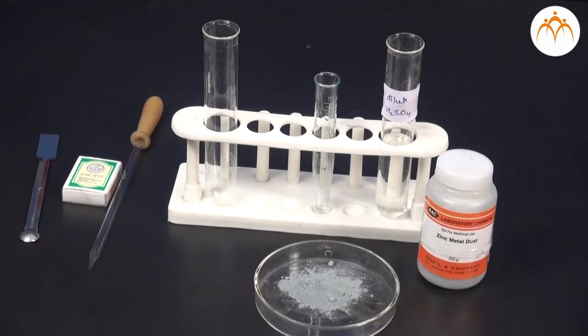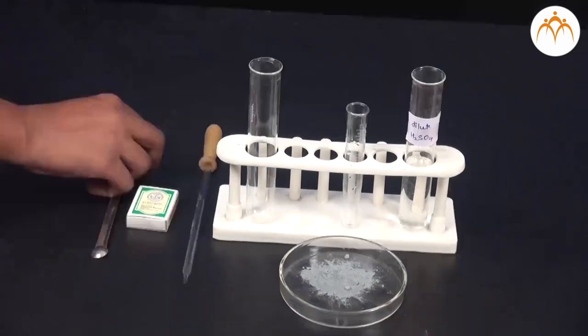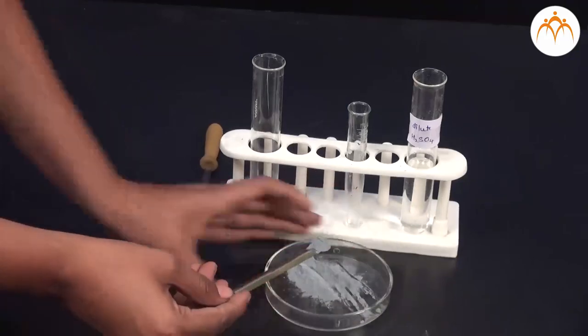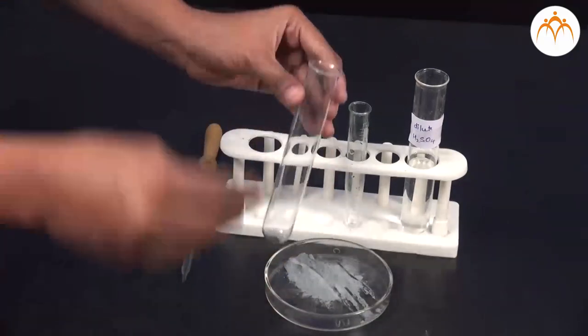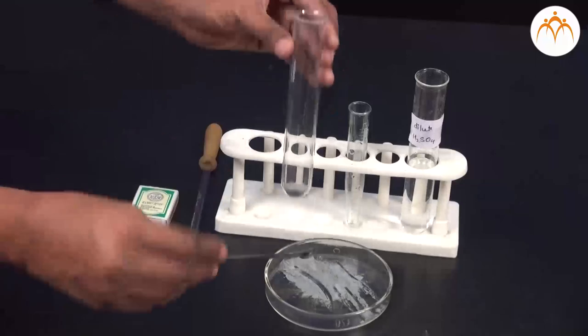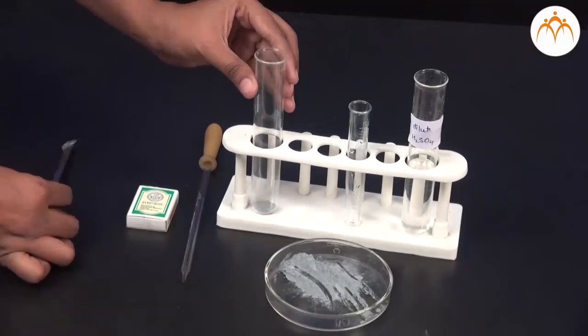Zinc is used in powder or dust form. We take a hard test tube in a clamp of a stand. Add some zinc dust to this test tube. Add a few drops of dilute sulphuric acid.